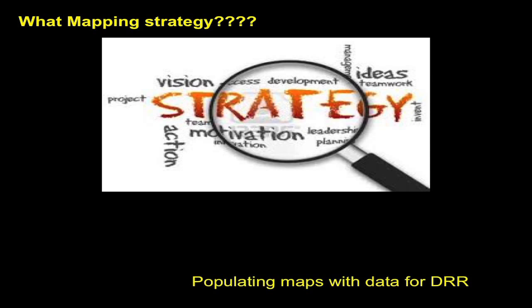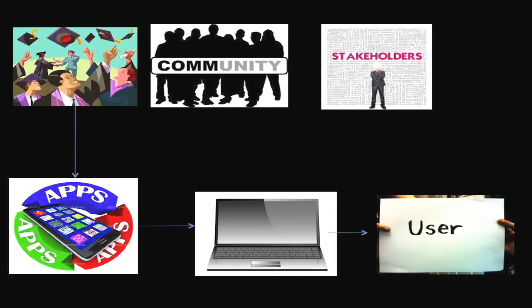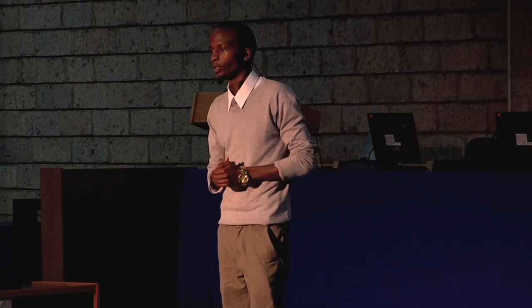So what strategy are we using? We have developed a strategy of a cheap, effective and quick tool where we involve students from the University of Nairobi or any other interested university, relevant stakeholders, and smartphones and laptops for whichever open source software, which I'm going to talk about later. The users of this kind of information are people like NGOs, government organizations, or any other interested party.